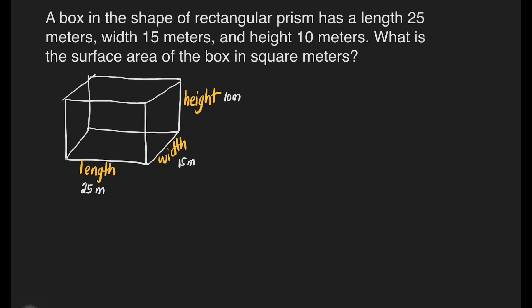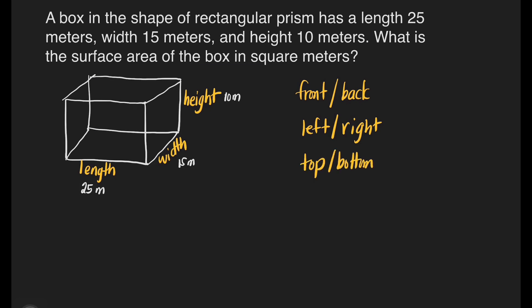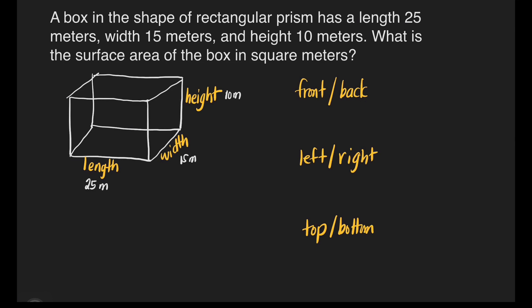How many faces do we have in this solid figure? First, we have the front and back — they're identical. We also have the left and the right face. We also have the top and the bottom. In order to get the surface area of the rectangular prism, we have to add all the areas of its surfaces.